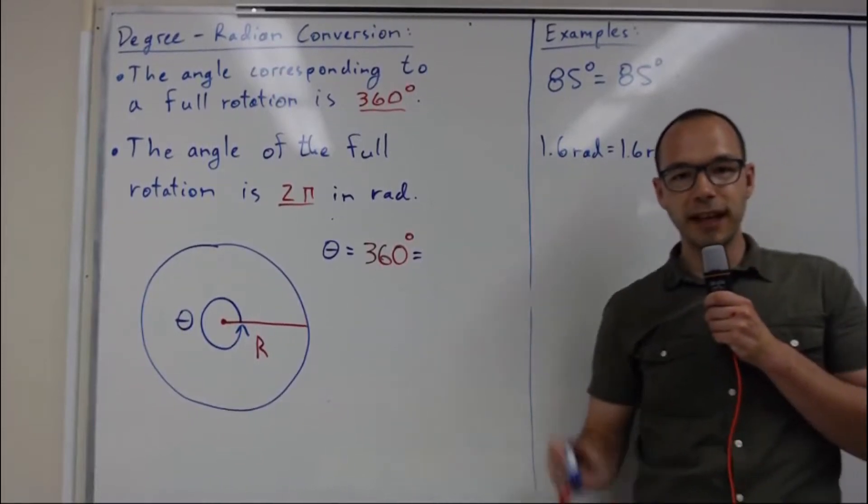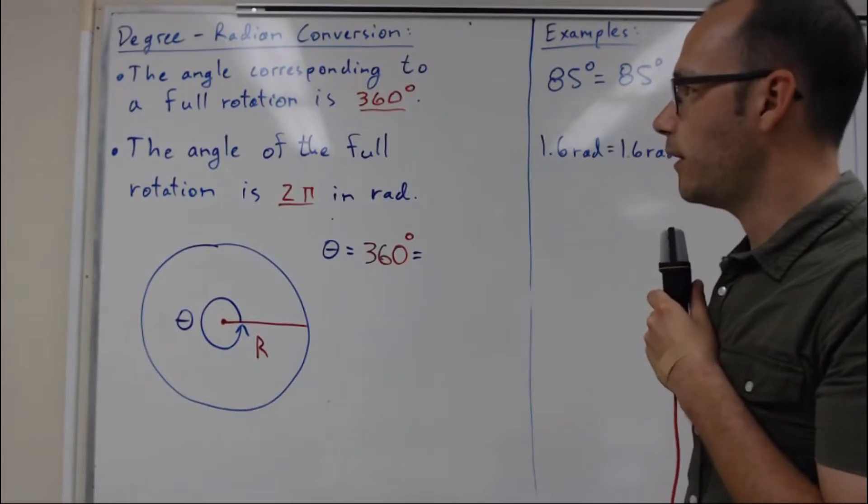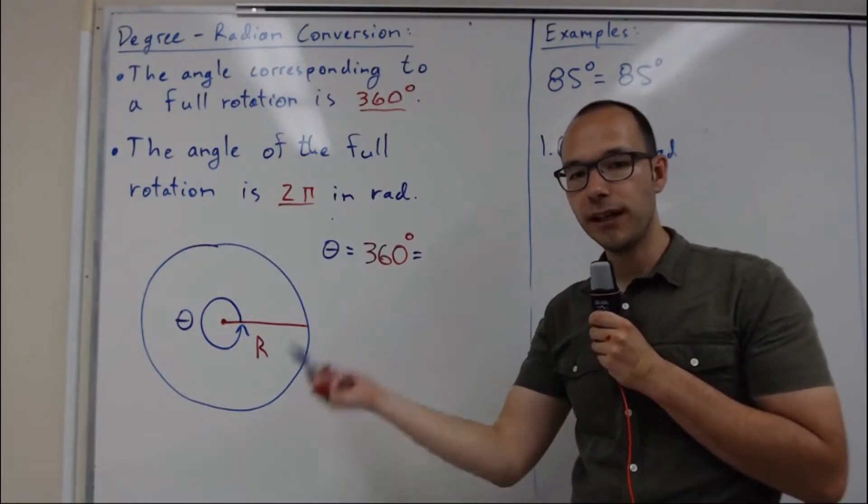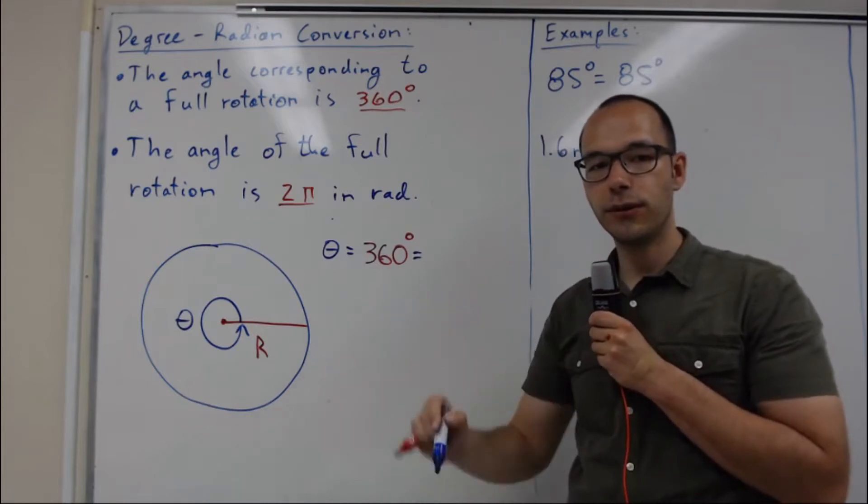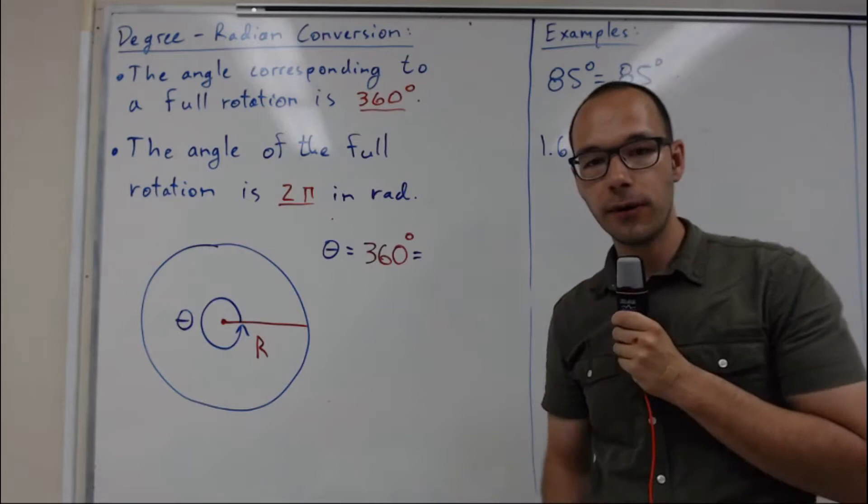Now we're going to be looking at degree-radian conversions. We'll be converting degrees into radians and radians into degrees. First, we have to figure out our conversion factor.